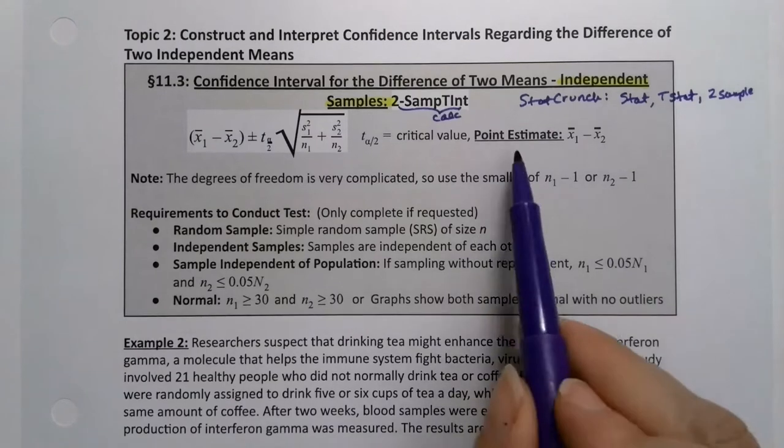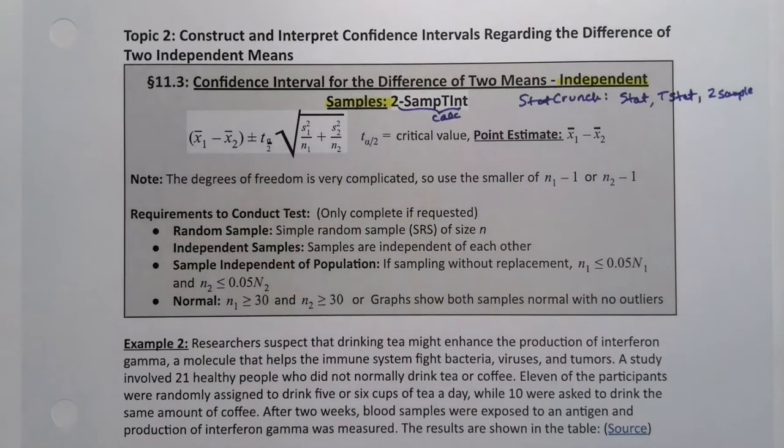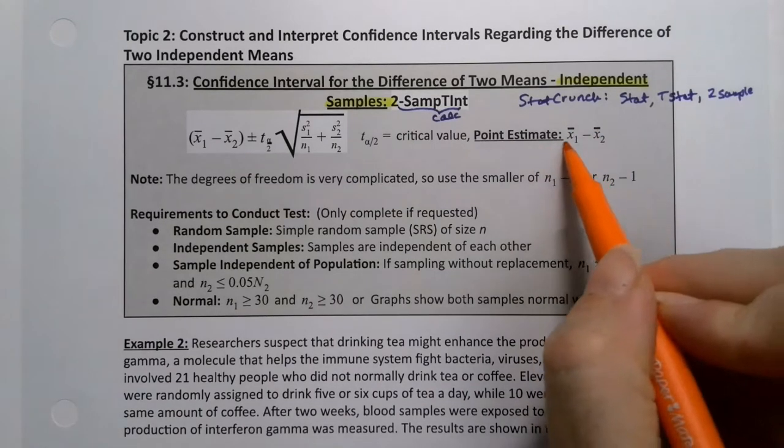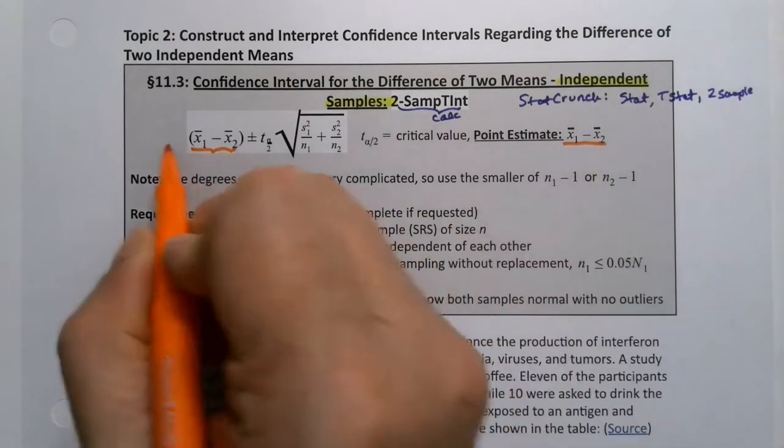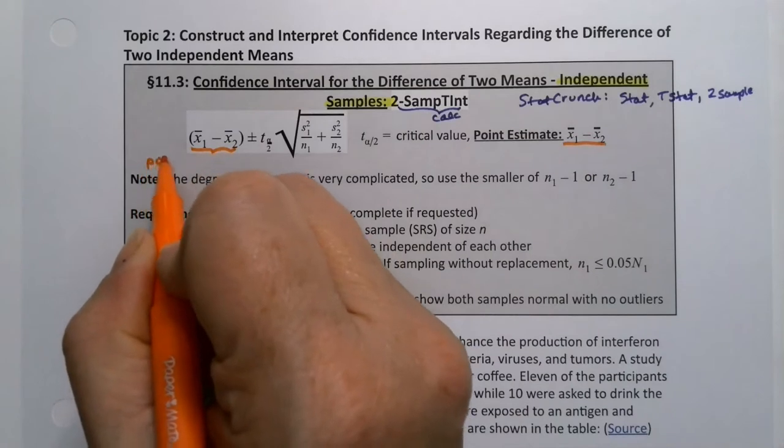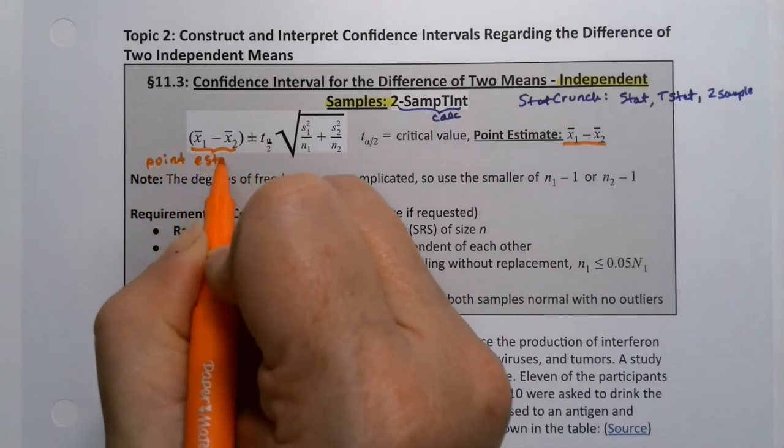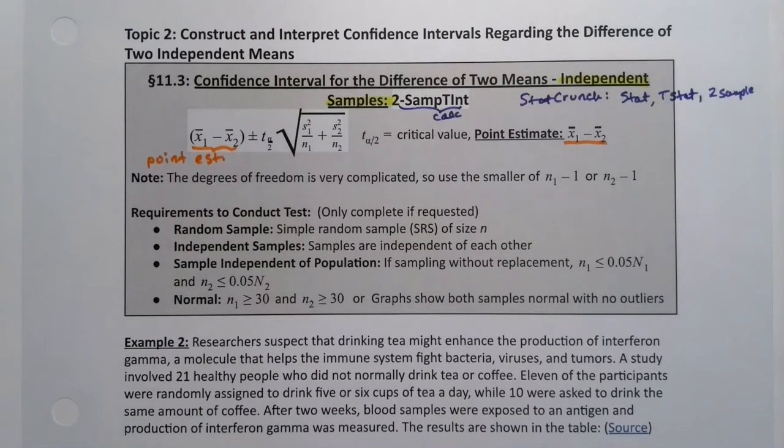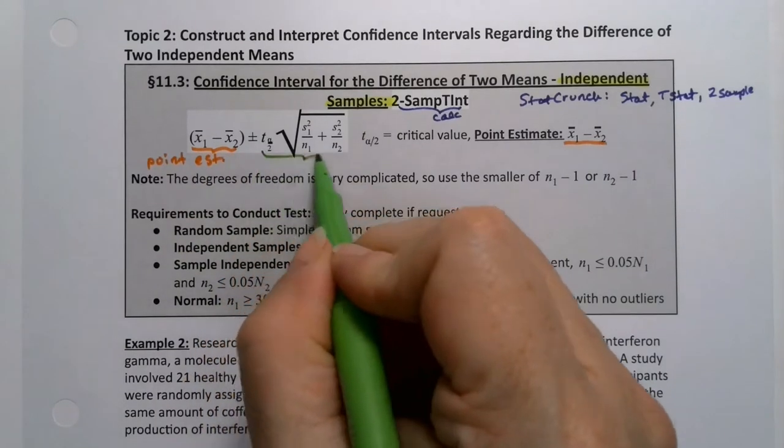Notice we have a point estimate, which is the center of our interval. That's right here. So your point estimate is right there, which is right here. So that's the center of your interval, that's your point estimate. And then you add and subtract away your margin of error, and your margin of error is right here.